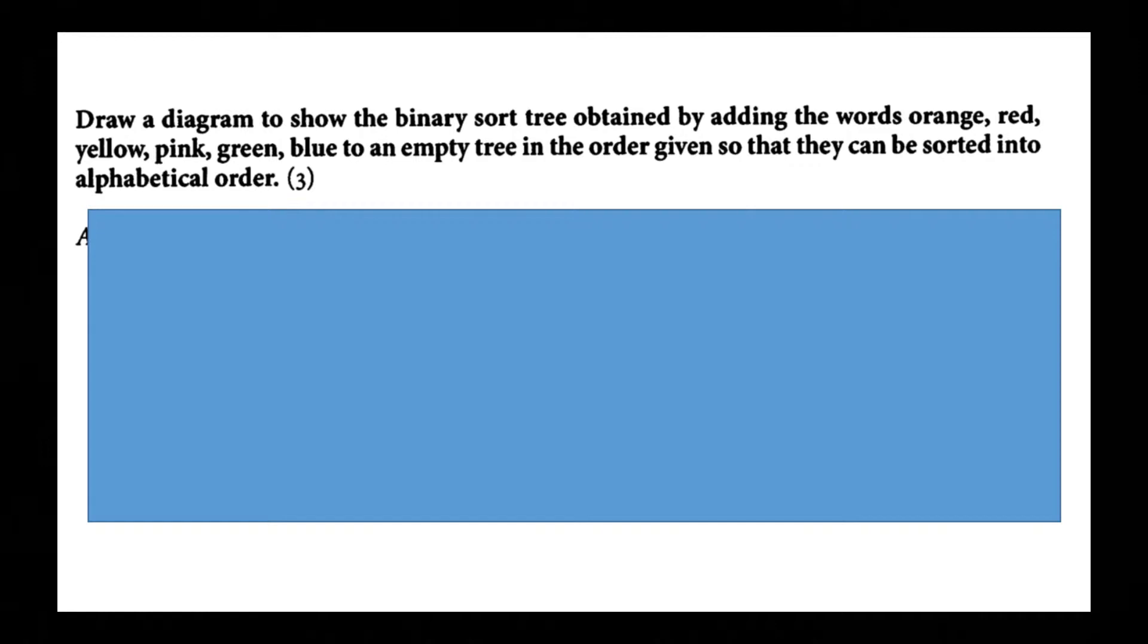Draw a diagram to show the binary sort tree obtained by adding the words orange red yellow pink green blue to an empty tree in order given so that they can be sorted into alphabetical order.